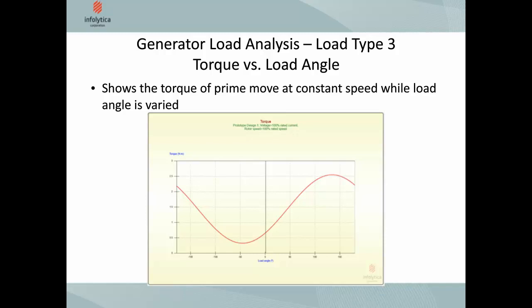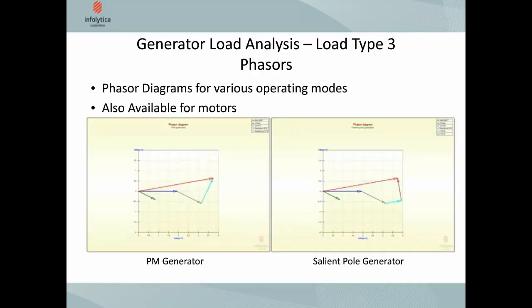The last performance chart is the phaser diagram, available through various methods. You can select the type of phaser because the definitions can differ slightly — for a permanent magnet generator the display can be changed to show how the phasers are arranged, as opposed to a salient pole generator where you have different components to the phaser diagram. You can choose that depending on the type of machine you're working with.